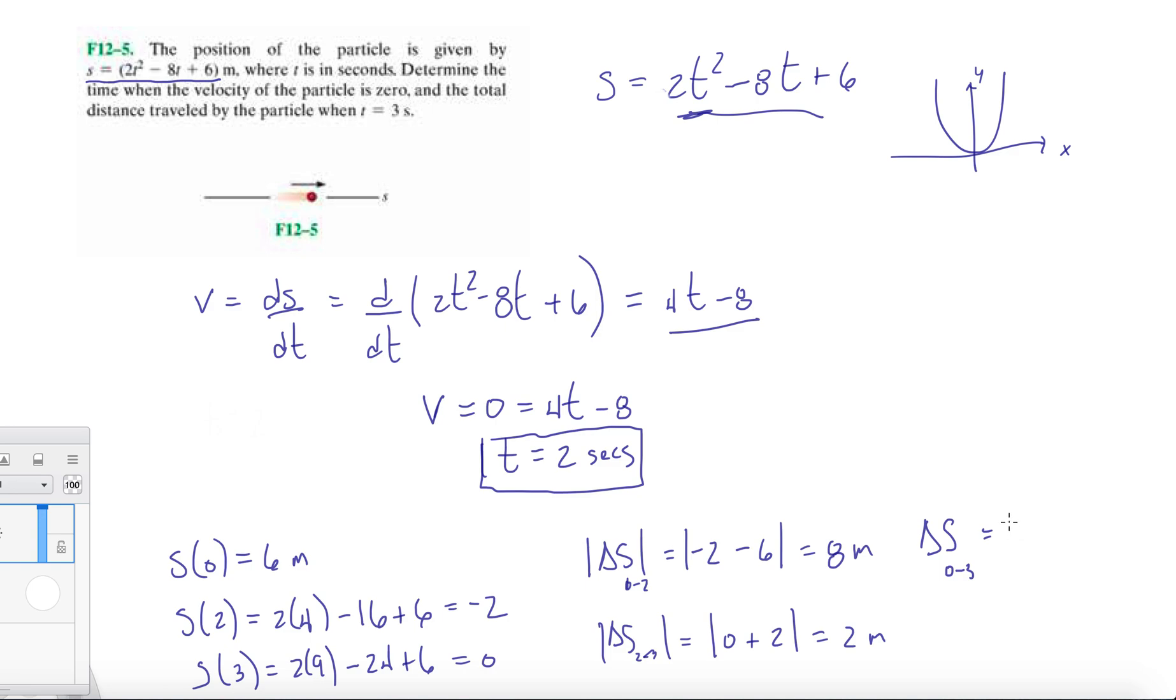So the total distance traveled from 0 to 3 seconds is just going to be - sum those two up, so the absolute distance is 8 plus 2, so that's 10 meters.